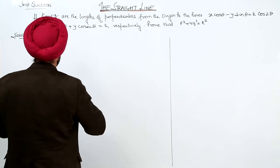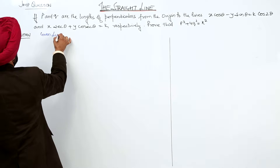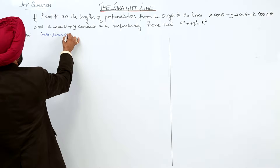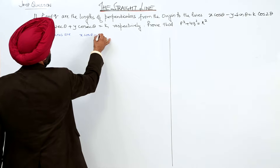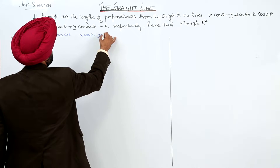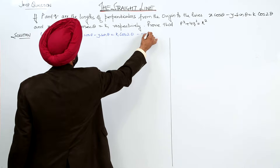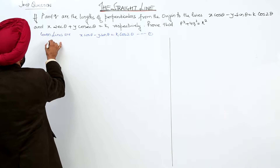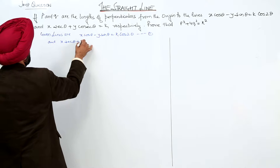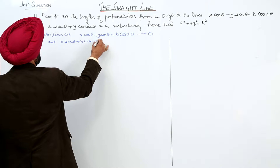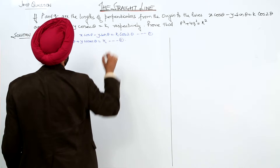The given lines are: x cos θ − y sin θ = k cos 2θ … (equation 1), and x sec θ + y cosec θ = k … (equation 2).